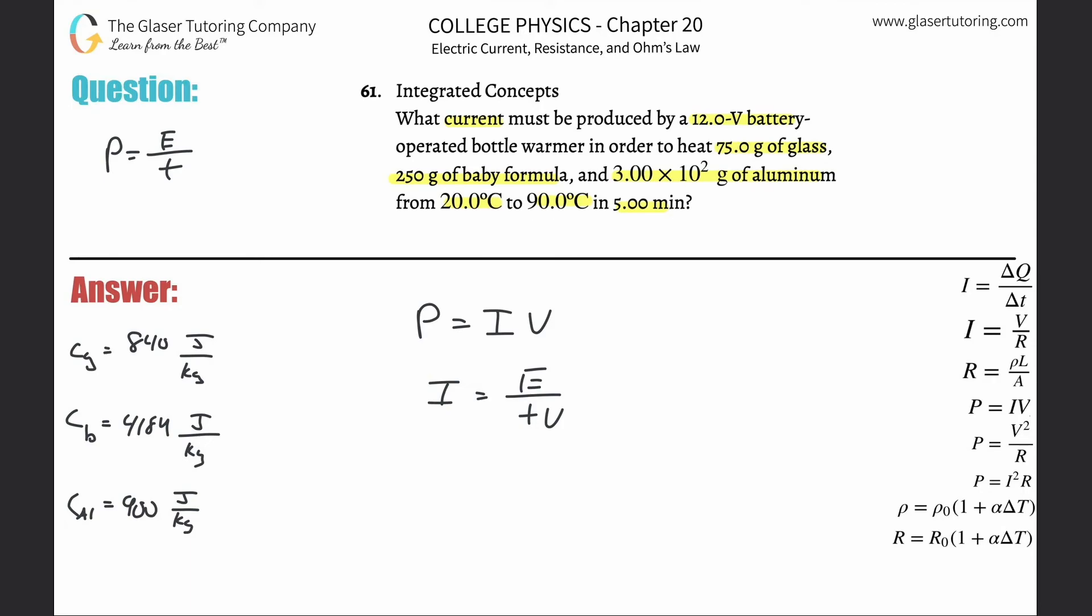So I'm simply now going to write this: the total amount of energy here will be equal to - I'm going to plug in a Q now because we're talking about heat energy - the energy it takes to heat up the glass, plus the energy to heat up the baby formula, plus the energy to heat up the aluminum.